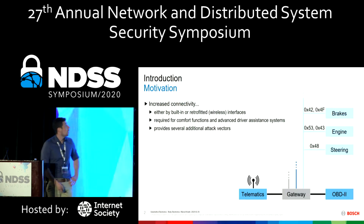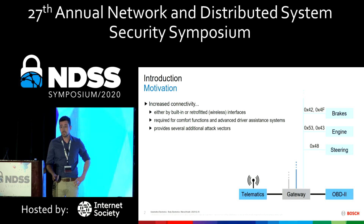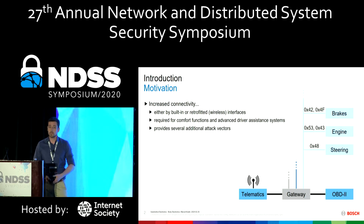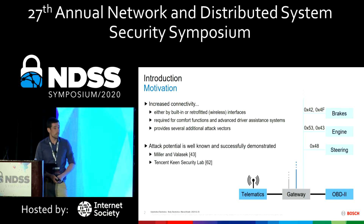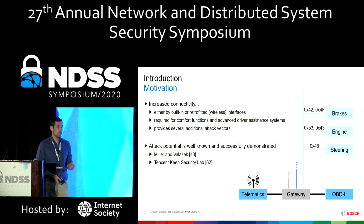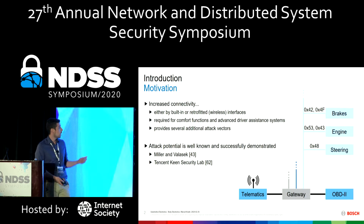The amount of wireless interfaces is increasing in cars, and besides additional benefits for comfort or driver assistance systems, these interfaces also provide potential attack vectors for attackers. That this is not a theoretical threat but an actual one was shown several years ago by Milan Velasek, for example. The researchers were able to remotely influence a car, especially some safety-critical functions like steering, brake, and engine. And that this is still possible today was recently shown by Tencent Keene Security Lab.